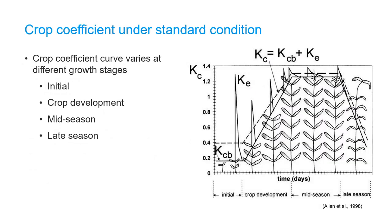Crop coefficients vary at different growth stages of the crop, namely initial crop development, mid-season, and late season. Therefore, it is important to determine the length of the crop season and the length of each growth stage when applying this method to estimate crop evapotranspiration.